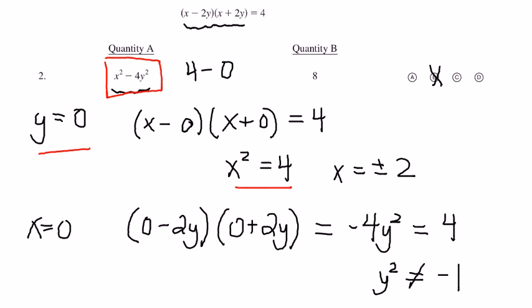This demonstrates a flaw in the pick numbers strategy, which is basically it doesn't always work. And also, when we have plugged in y = 0 and concluded that the quantity in column A was 4 and the quantity in column B was 8, we know for sure...